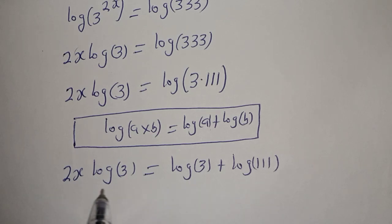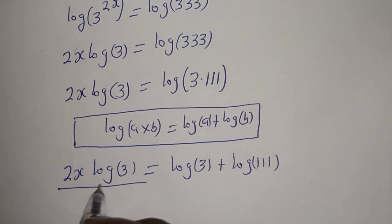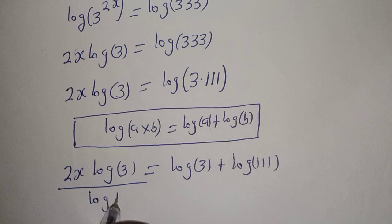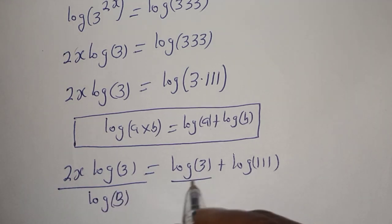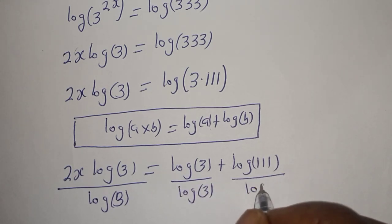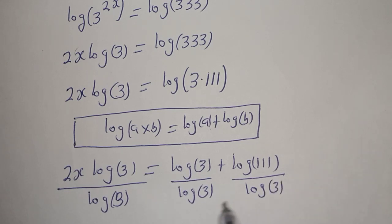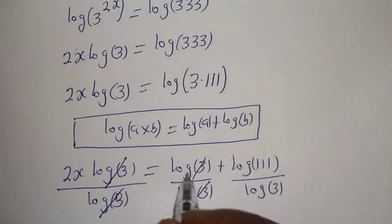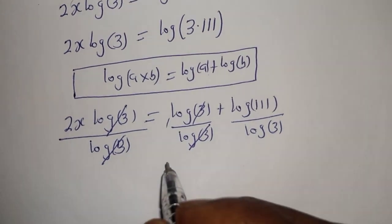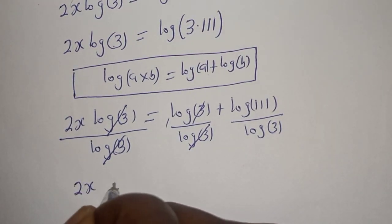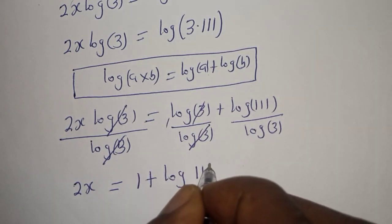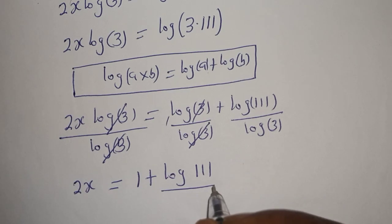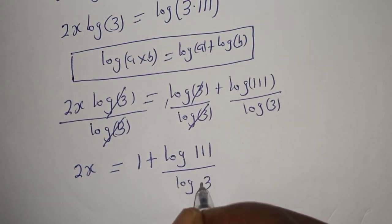Now let's divide both sides of this equation by log 3. The log 3 on the left cancels, and we have 2s equal to 1 plus log 111 over log 3.